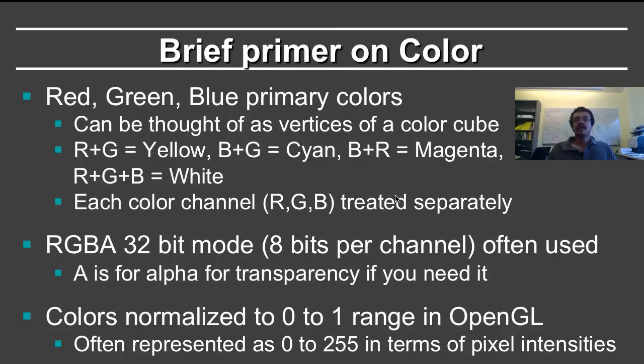Before we go further, all of you are used to looking at color images, so we have to say something about color. Color is a fascinating topic — here I'm going to give you a very brief one-slide primer. As humans, we are largely sensitive to three primary colors: red, green, and blue. In practice we have a range of sensitivities across the visible spectrum, but we have standardized on these three primaries for computer displays. One common illustration is a color cube, where you place red, green, and blue at the vertices, and then combine colors in various ways. This can also be drawn as a Venn diagram.